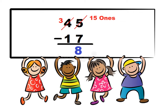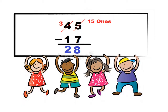Next, we need to count the tens place. As we already traded a tens block for 10 ones, we change this 4 to a 3. So we need to subtract from 3 to 1. 3 subtract 1 is 2, so 2 goes in the tens place. So guys, 45 minus 17 is 28.